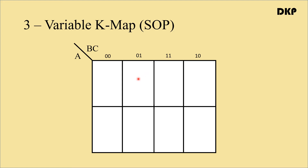We can call the two rows 0 and 1, where 0 denotes A bar and 1 denotes A. So the first row is represented with binary value 0, meaning A bar, and the second row is represented with binary value 1, meaning A.